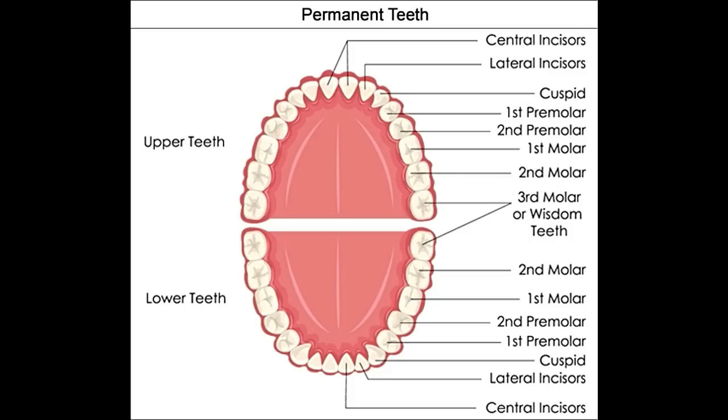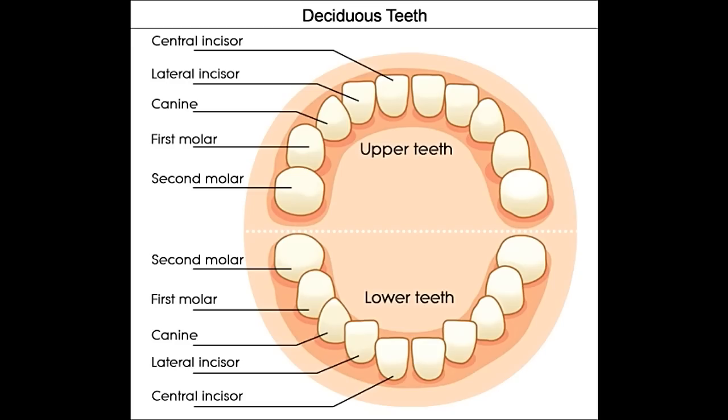The third molars are also referred to as wisdom teeth. Not every person may develop wisdom teeth. Deciduous teeth are the first set of twenty teeth that appear in childhood. It must be noted that children don't have premolars — only adults have premolars, which are part of permanent teeth only.